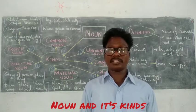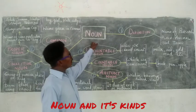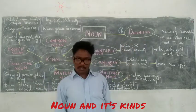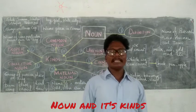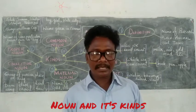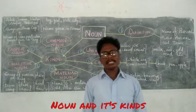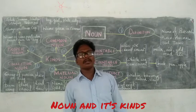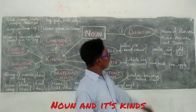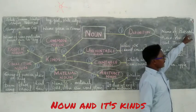Let us begin this topic. Noun Definition: What is a noun? A noun is a name of a person, a place, an animal or a thing.